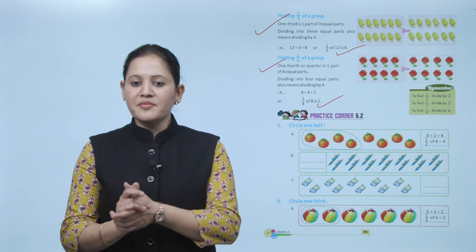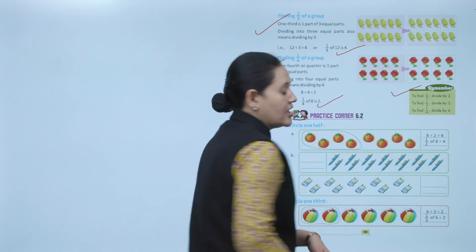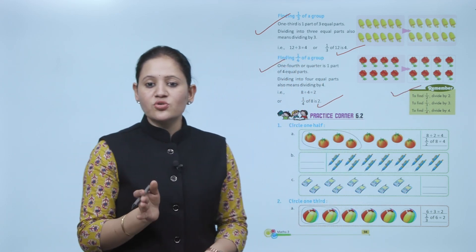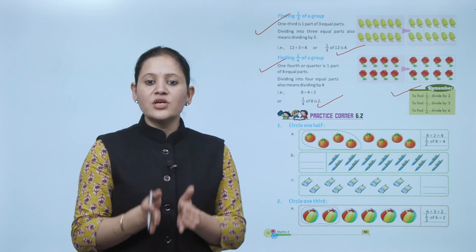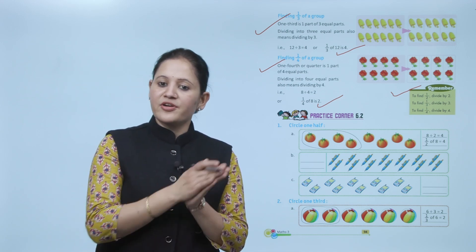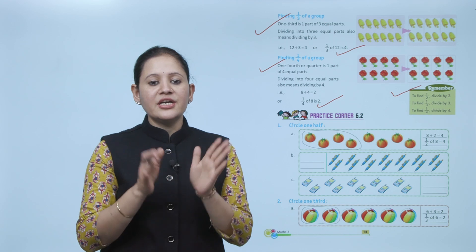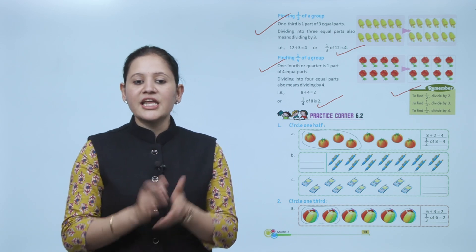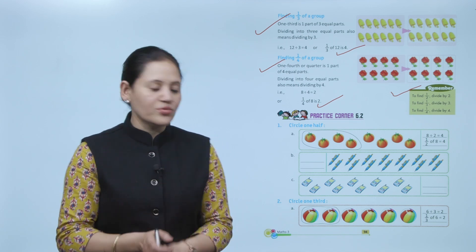Remember: if you have to find 1 by 2, you will divide by 2. If you have to find 1 by 3, you will divide by 3. If you have to find 1 by 4, you divide by 4. Next is practice corner 6.2.